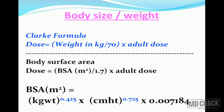The next important factor is body size and weight. Clark's formula tells us: dose equals weight in kilograms divided by 70, multiplied by adult dose. For drugs with a narrow margin of safety, we use body surface area: dose equals body surface area in square meters divided by 1.7 (normal body surface area), multiplied by adult dose. Body surface area is calculated using various available formulae.